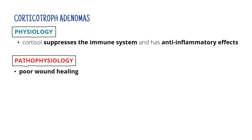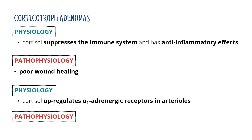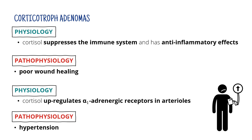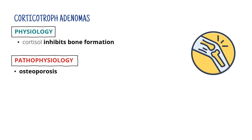Another effect is that cortisol upregulates alpha-1 adrenergic receptors in arterioles. Upregulation simply means there are more of these receptors. They are important for catecholamines — epinephrine and norepinephrine — that increase blood pressure. So it's no surprise that the patient may suffer from hypertension. Finally, cortisol also inhibits bone formation, so the patient can suffer from osteoporosis. We could go on, but this topic deserves a separate video, so note that these are not all the symptoms found in patients with Cushing disease.